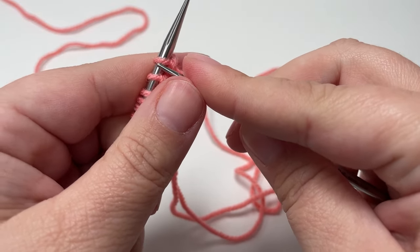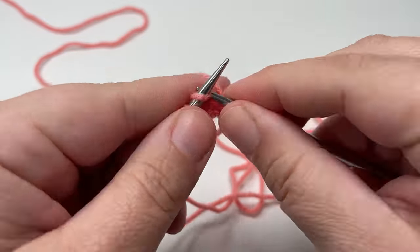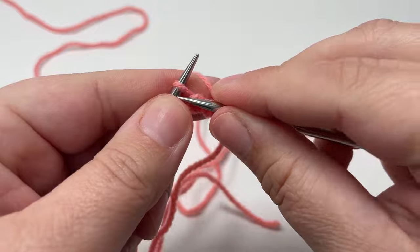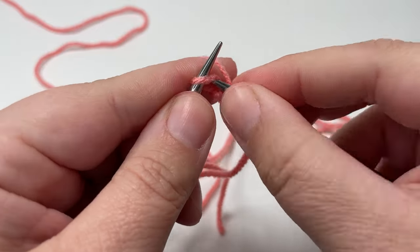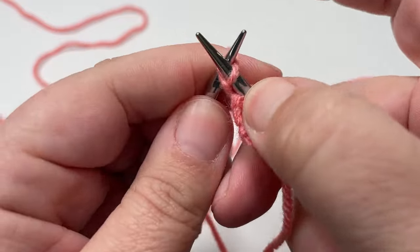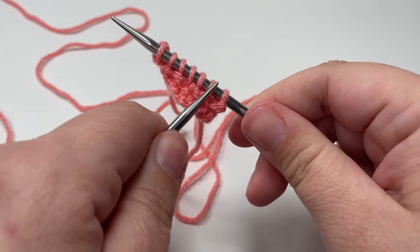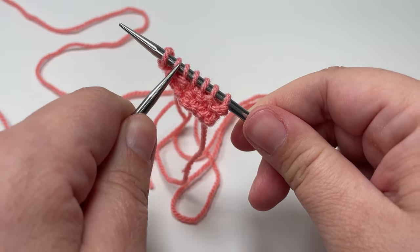Row one, knit until the last stitch. And in the last stitch you want to knit front, knit back. So it's a knit front back increase and you will increase by one stitch. So we've gone from six stitches to seven.